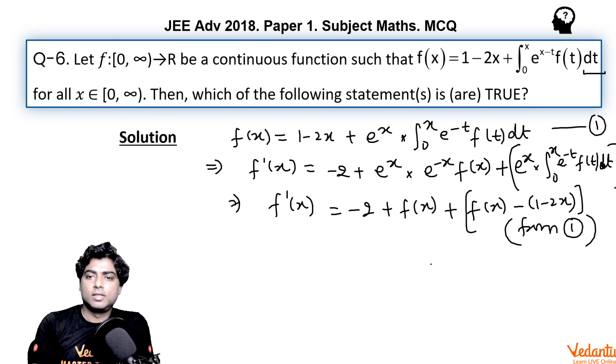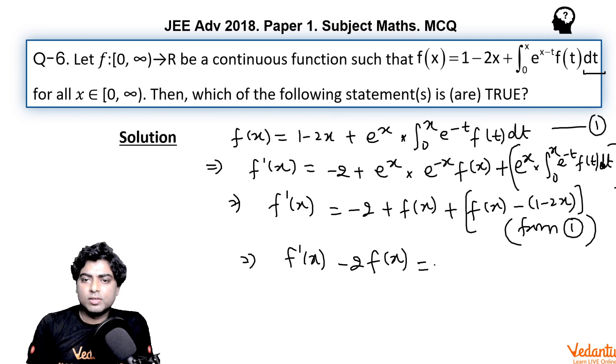So from here, we can write f'(x) - f(x) equals minus 2f(x), so f'(x) - 2f(x) equals, finally, we are getting 2x - 3.